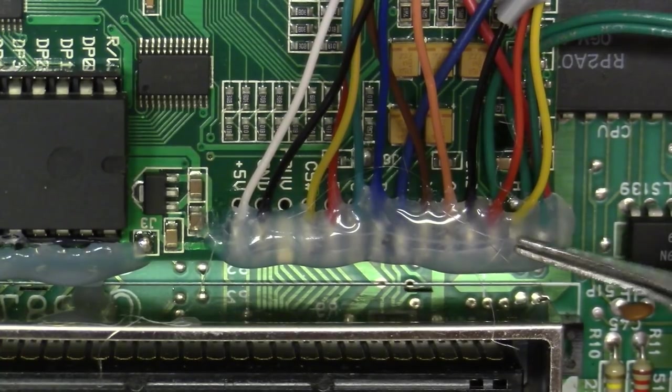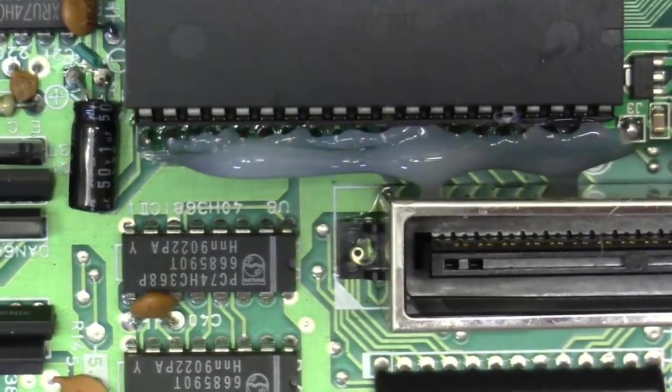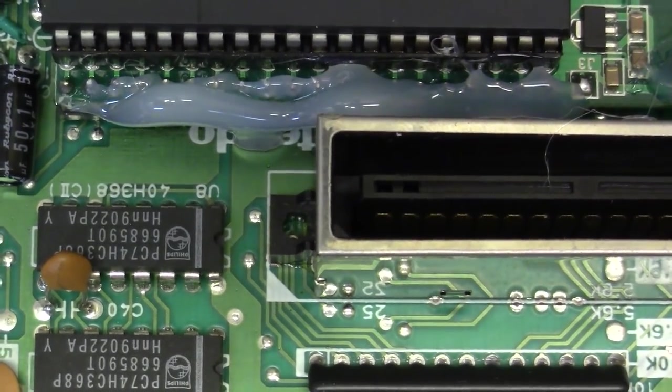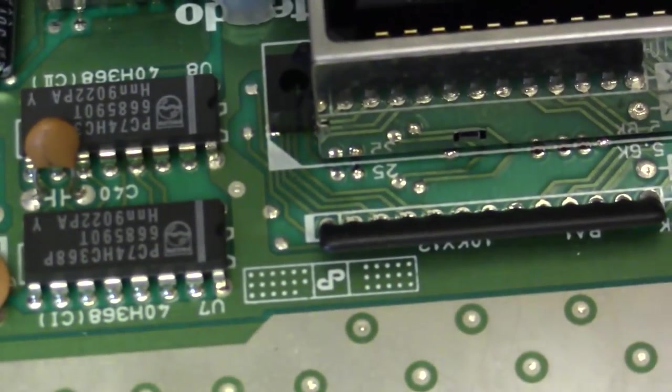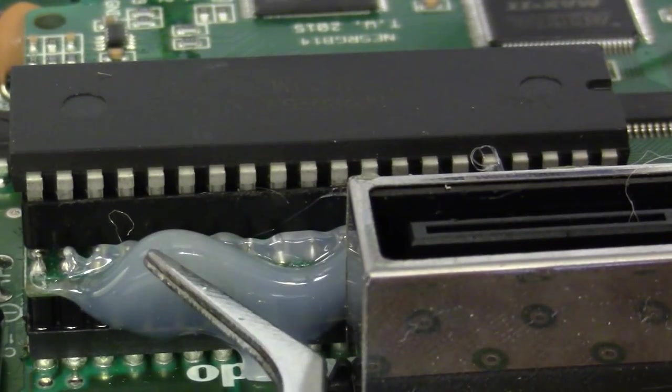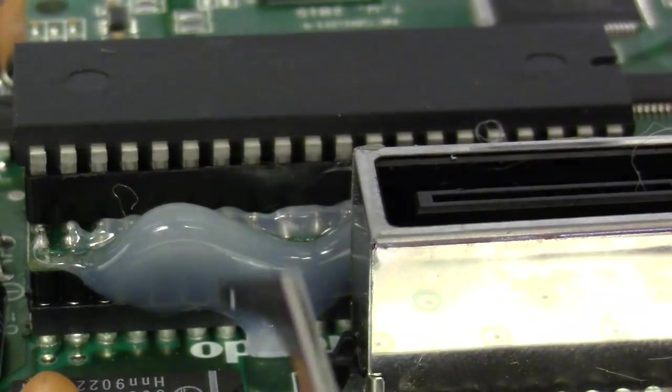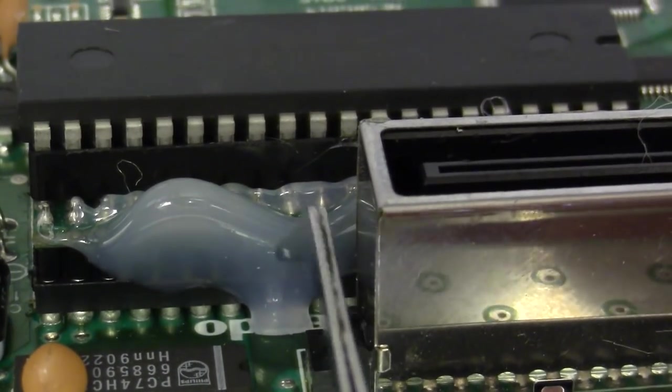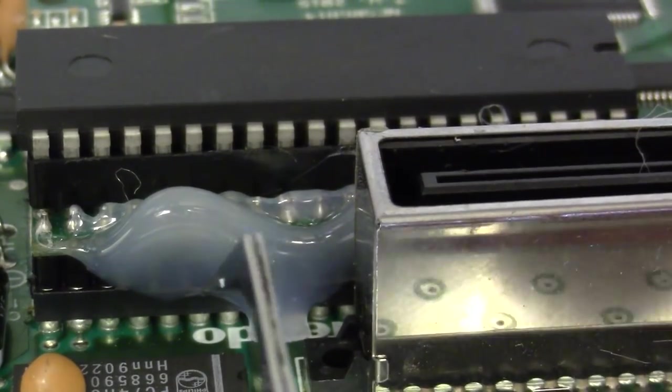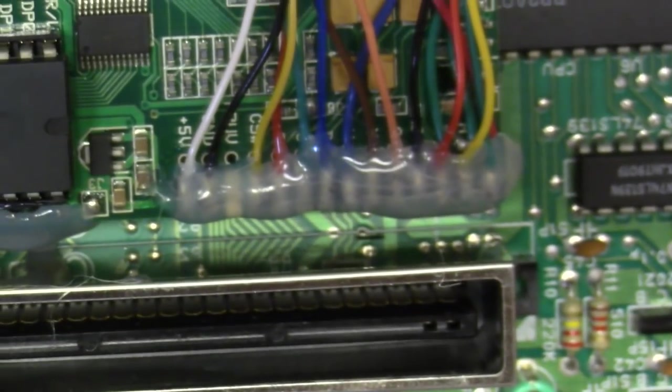Another telltale sign of a very poor modder who is not confident with their soldering ability is the process of hot gluing all over the soldering joints. This is a full rework on the board. If we move over to where the PPU socket is, for whatever reason he has hot glued between the PPU, NES RGB, and the actual mainboard.